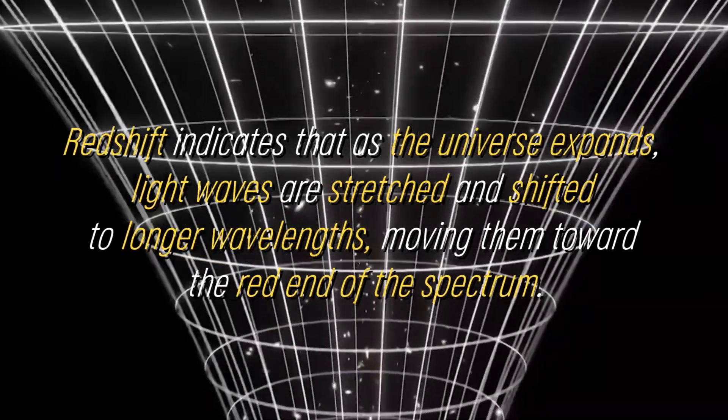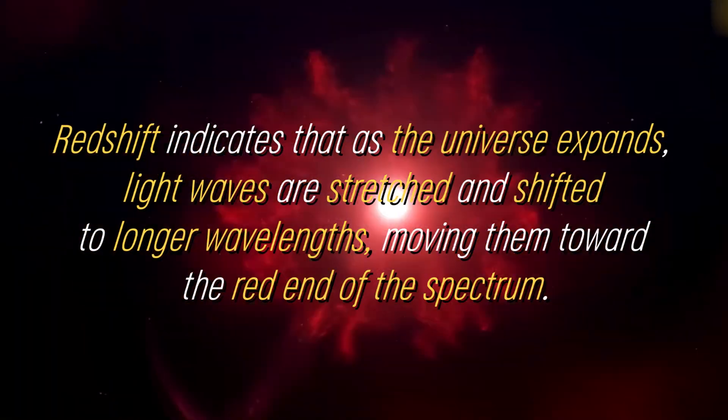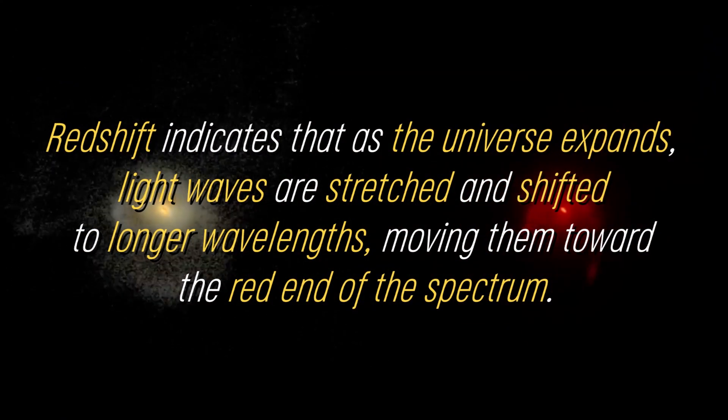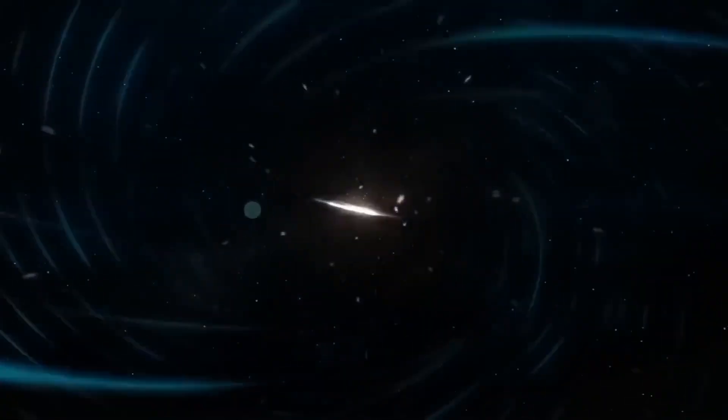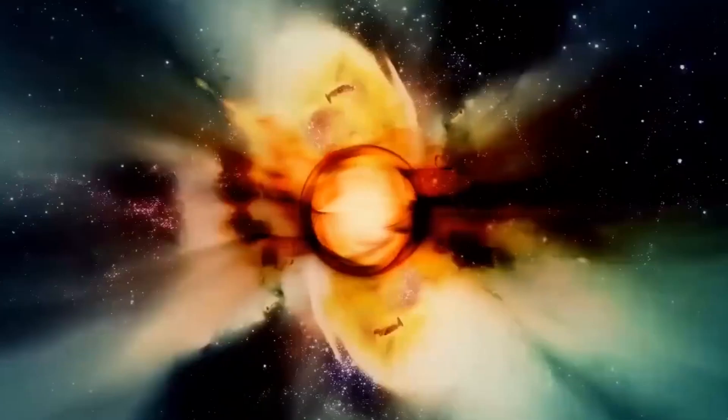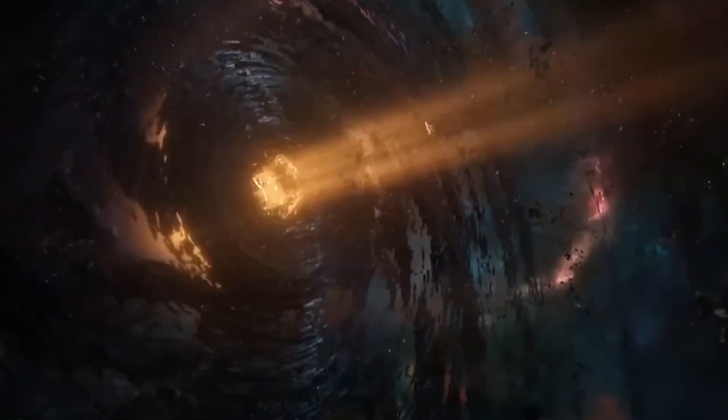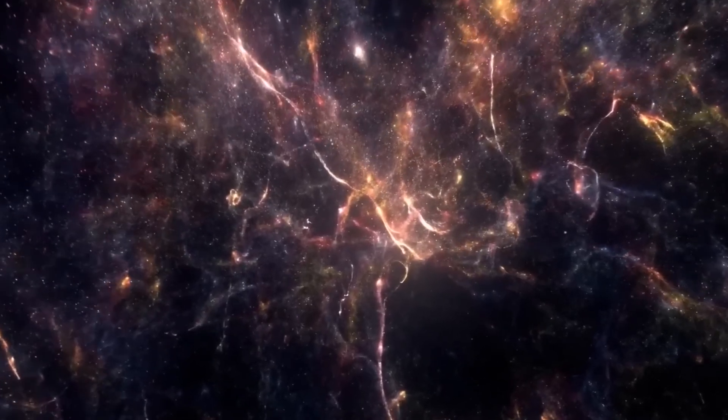Redshift indicates that as the universe expands, light waves are stretched and shifted to longer wavelengths, moving them toward the red end of the spectrum. During the expansion, all the stuff that makes up our universe was compressed into an incredibly small volume. It was clear that matter could not survive in such a compact space, so transformations occurred as the universe expanded and cooled.